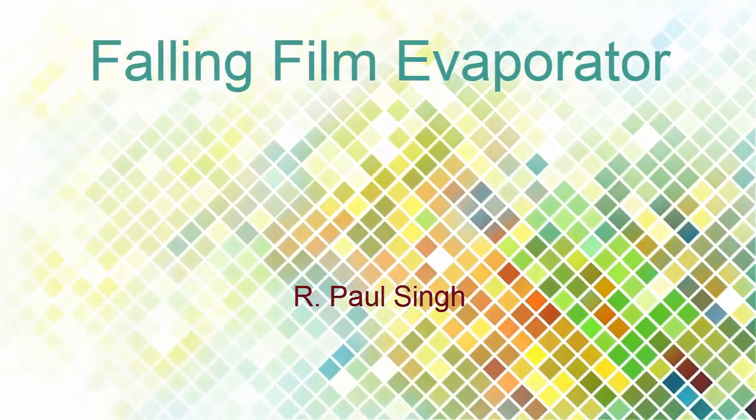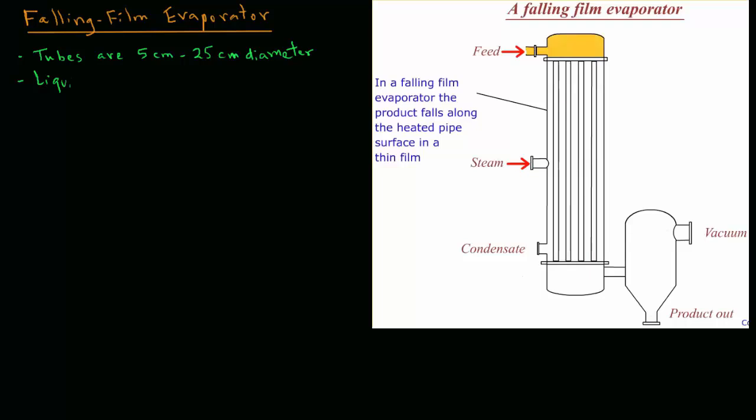In falling film evaporators, long tubes of diameters from 5 centimeters to 25 centimeters are used. The liquid feed enters from the top and the liquid flow inside the tubes is by gravity, but the design gets complicated to get a uniform distribution of the liquid as it flows down inside the tubes.